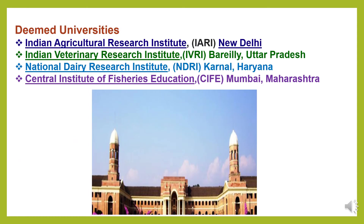Under ICAR, the four deemed universities are: Indian Agricultural Research Institute (IARI), New Delhi; Indian Veterinary Research Institute (IVRI), Bareilly, Uttar Pradesh; National Dairy Research Institute (NDRI), Karnal, Haryana; and Central Institute of Fisheries Education (CIFE), Mumbai, Maharashtra.